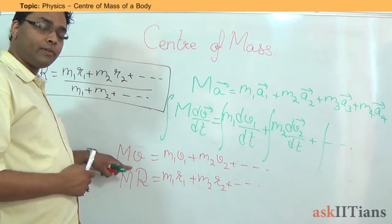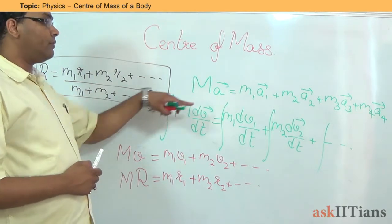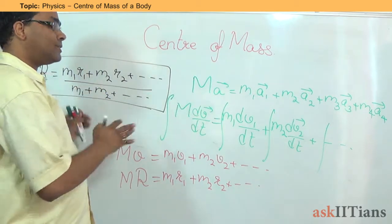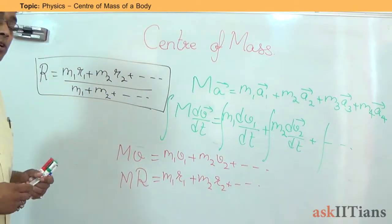Similarly, from this particular expression you can find out the center of mass velocity. From this expression you can find out the position, the acceleration of the center of mass. So this is how we define the center of mass of the object.